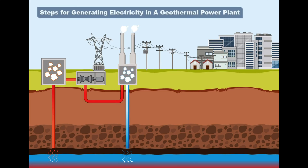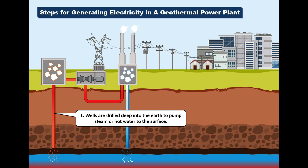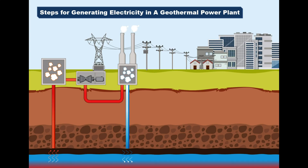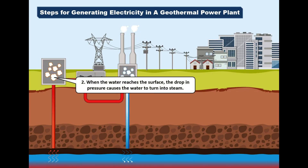Here are the steps for generating electricity in a geothermal power plant. Number 1: Wells are drilled deep into the earth to pump steam or hot water to the surface. Number 2: When the water reaches the surface, the drop in pressure causes the water to turn into steam.